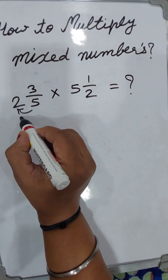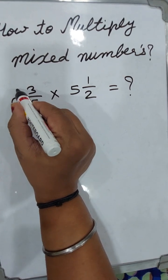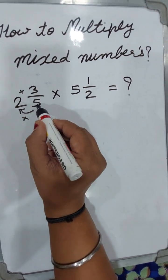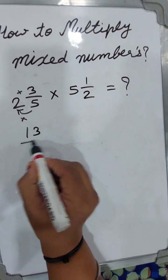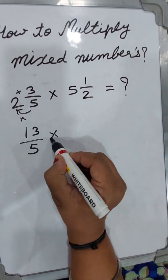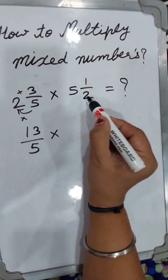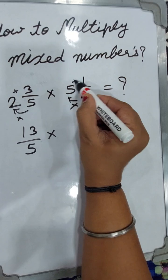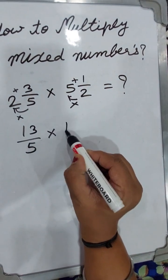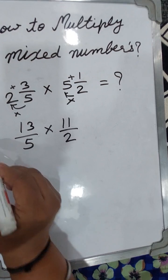Multiply 5 times 2, then add 3. That's 10 plus 3 equals 13 over 5. For the second number, 2 times 5 equals 10, plus 1 equals 11 over 2.